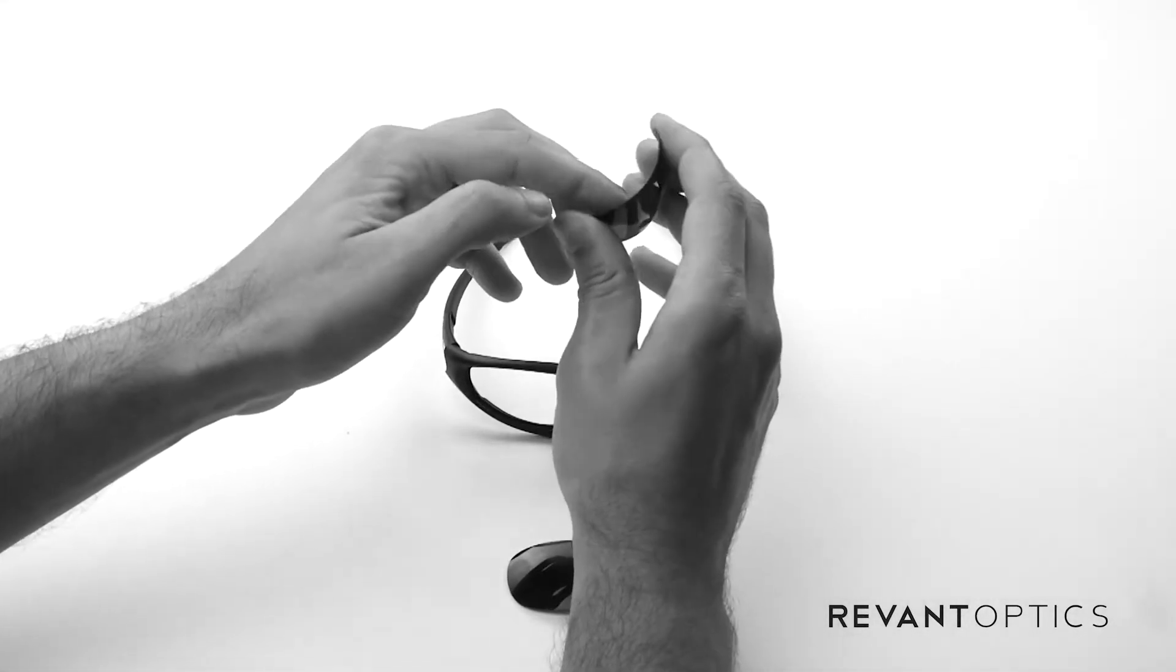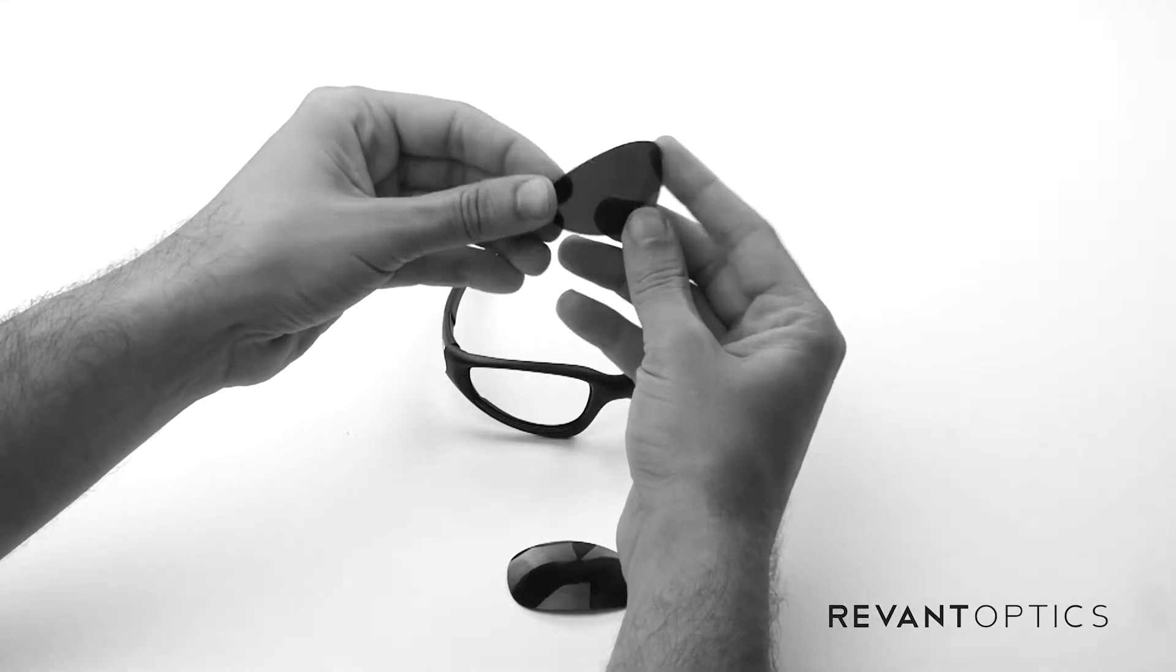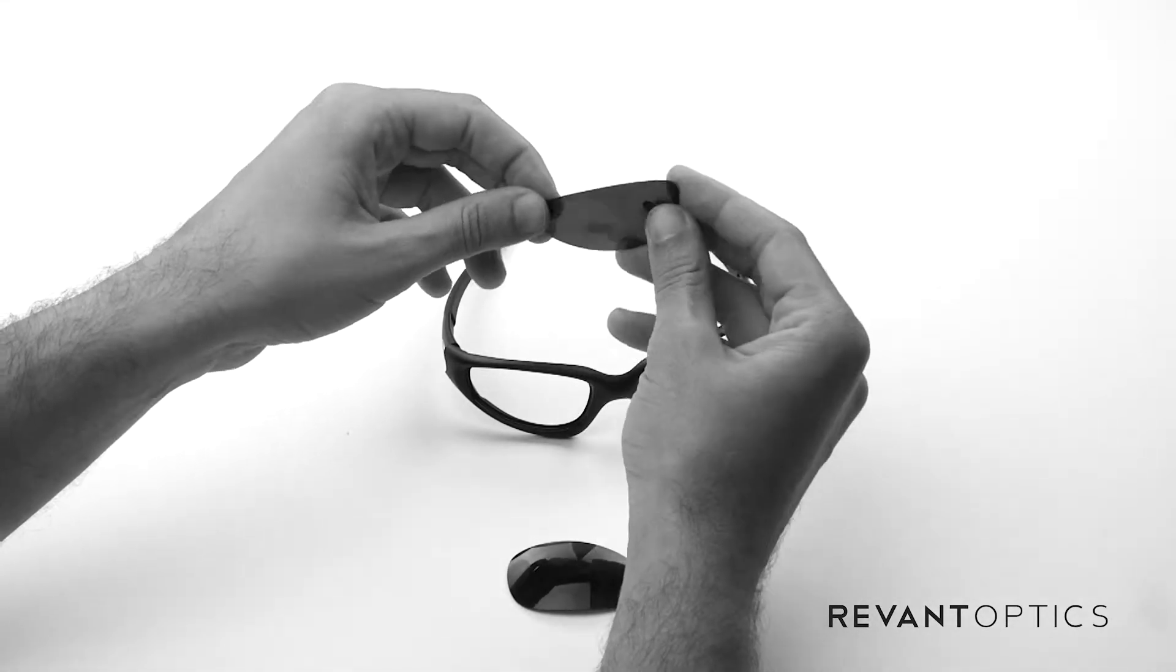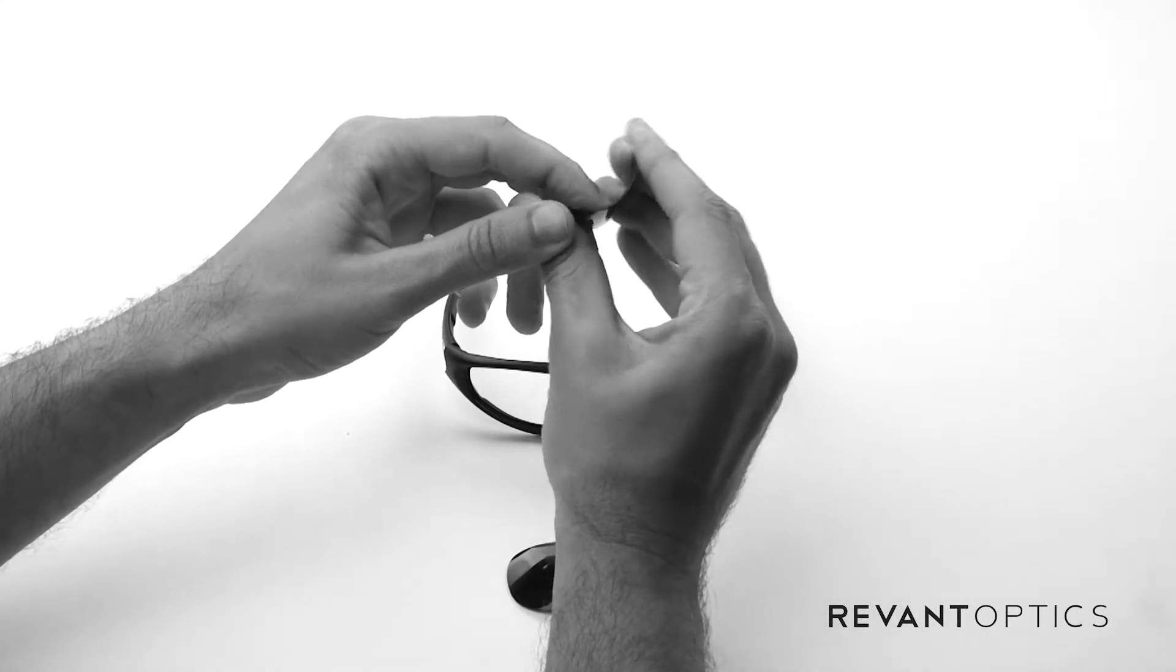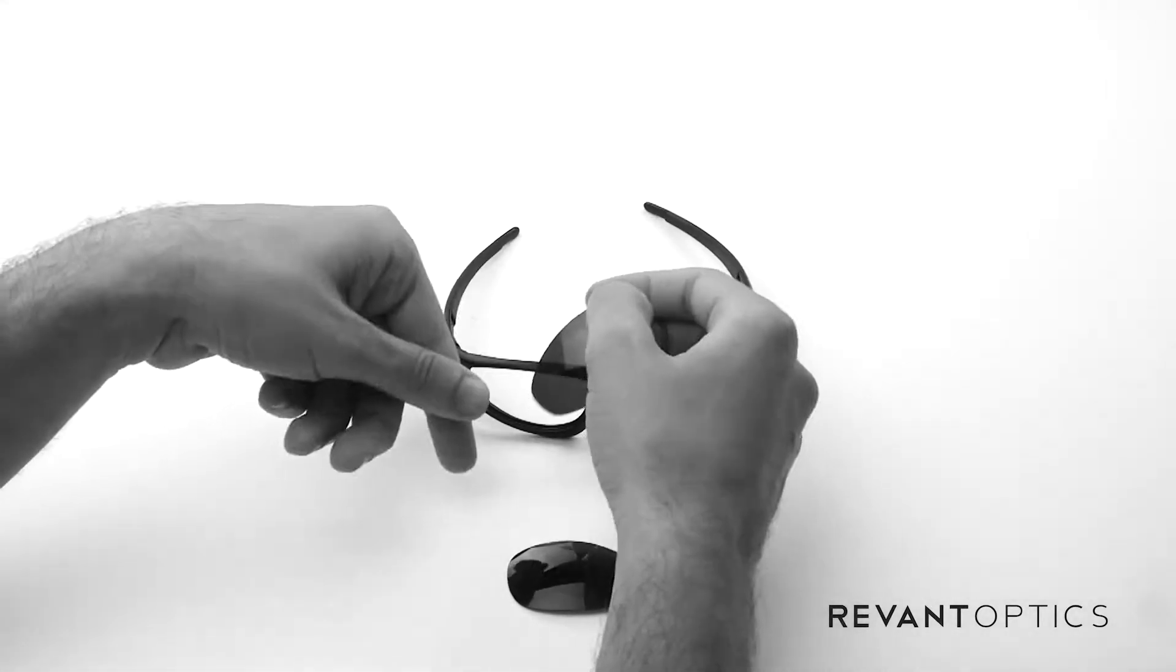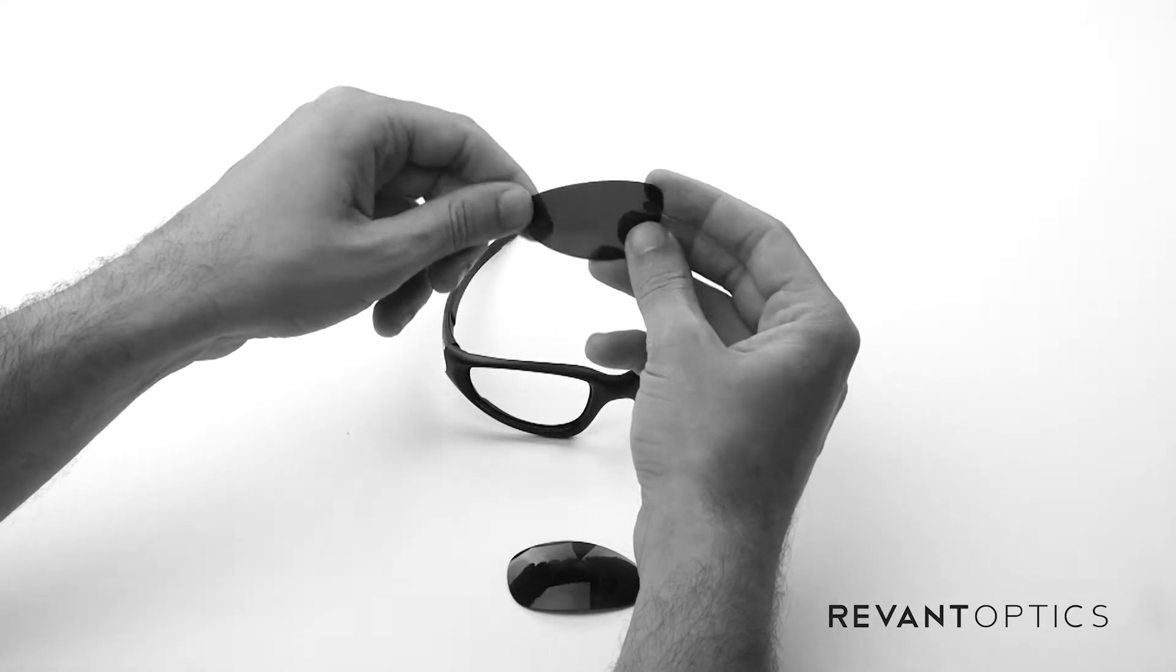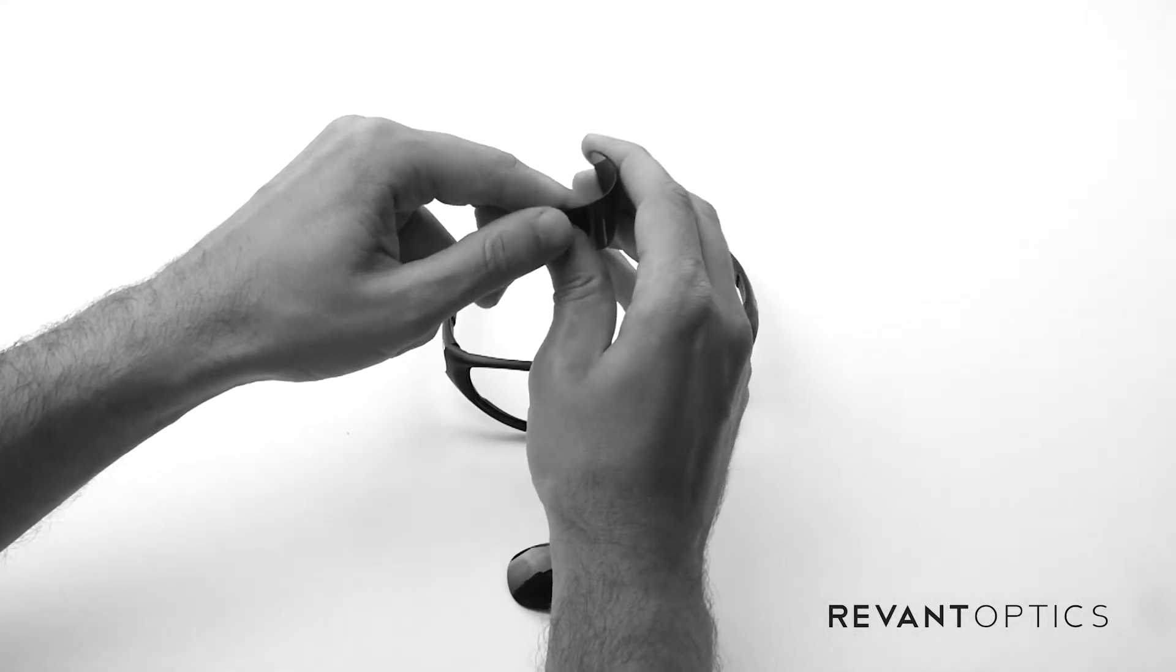These particular lenses are RevantOptics Polarized Stealth Black lenses. They look amazing in the frames and they're also incredibly durable and flexible, as you can see. If you need to bend them at all to get them out or into the frame, don't worry about it. They'll pop right back into their original shape.